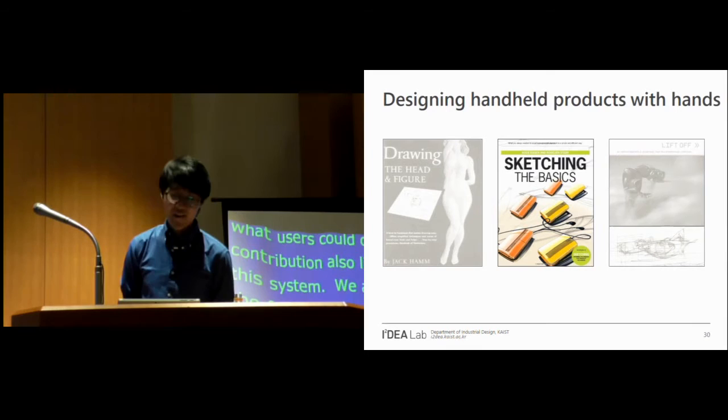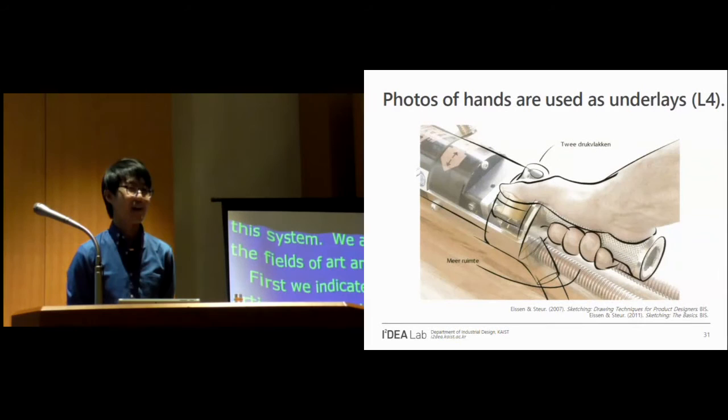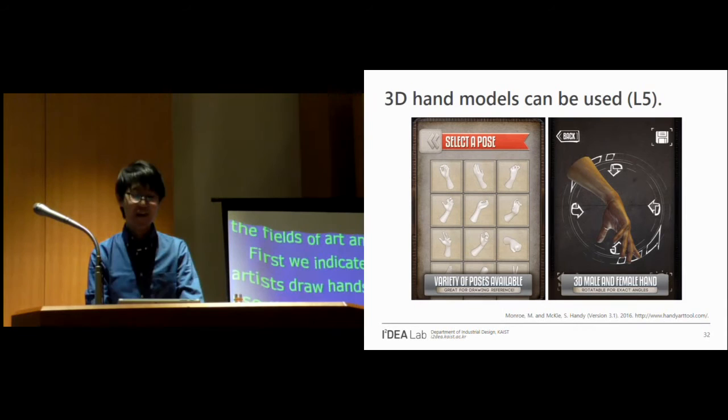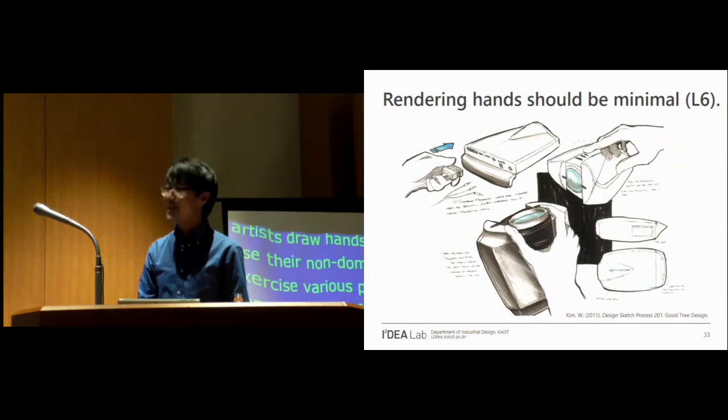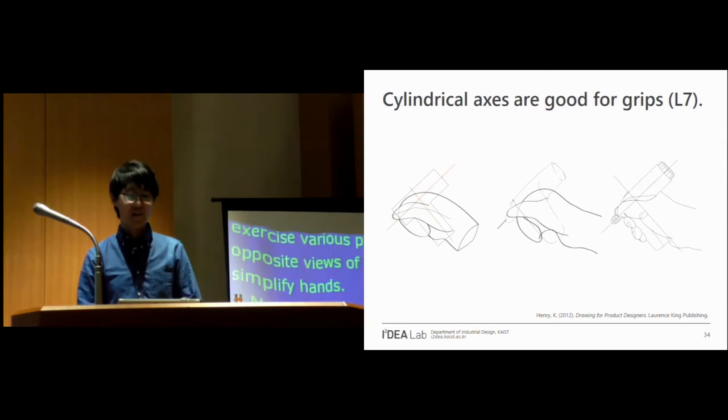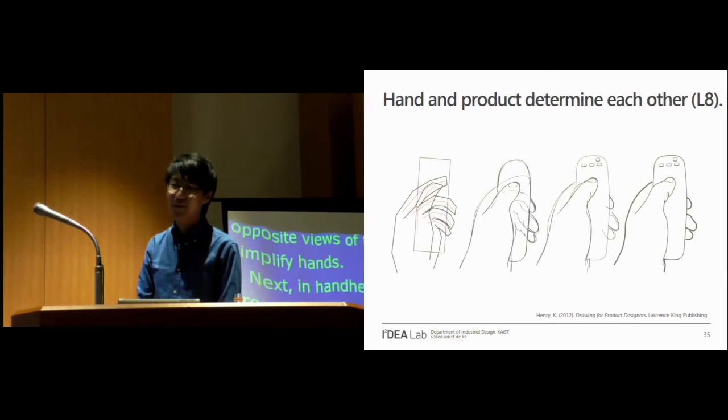Next, in handheld product sketching process, designers use photos of hands as underlays and 3D models to get unlimited views but with a limited set of poses. Also they render hands minimally to support product ideas. They often start with cylindrical axes for hand grips and develop both the hand and the product together.